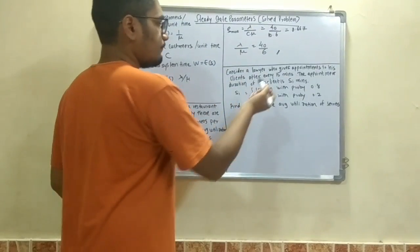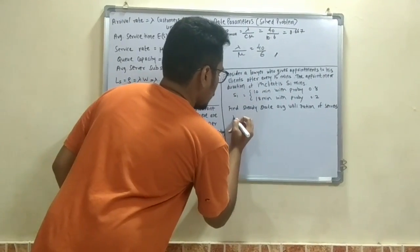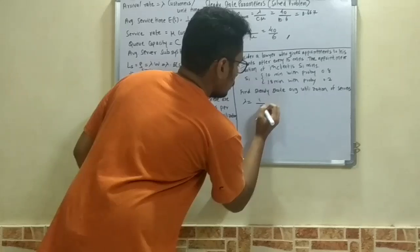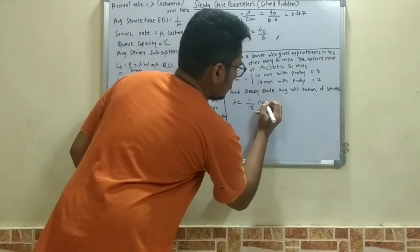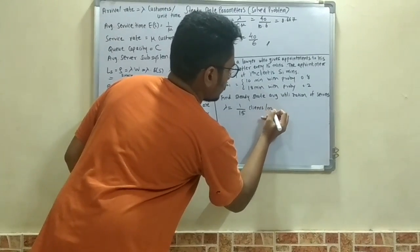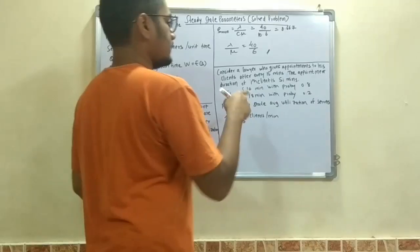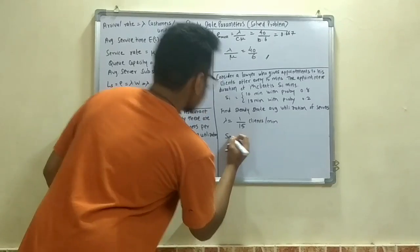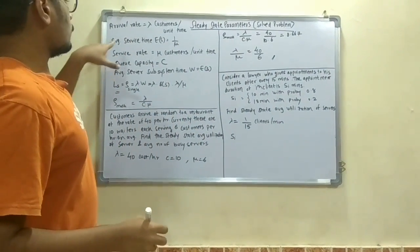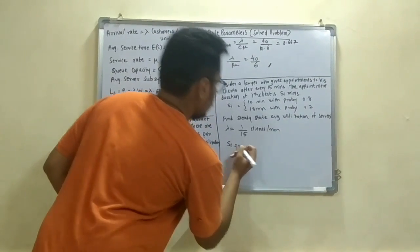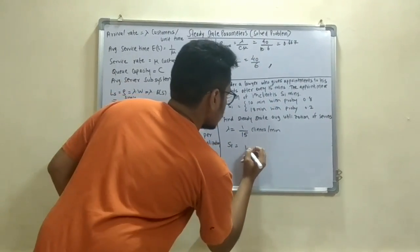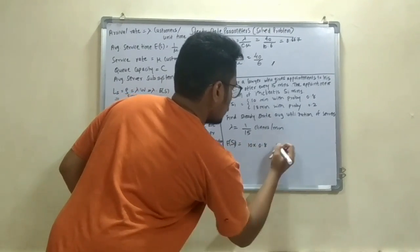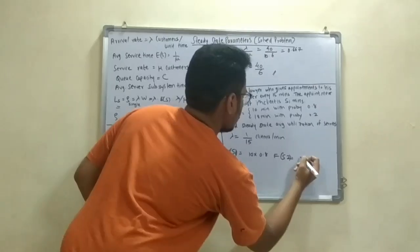So in this it is saying that customers or the clients arrive after every 15 minutes. So it is the arrival rate and arrival rate is one customer after every 15 minutes. So it will be 1 by 15 clients per minute. Next it says that there are two SI values, that is S1 and S2. That is S1 would be the average service time.